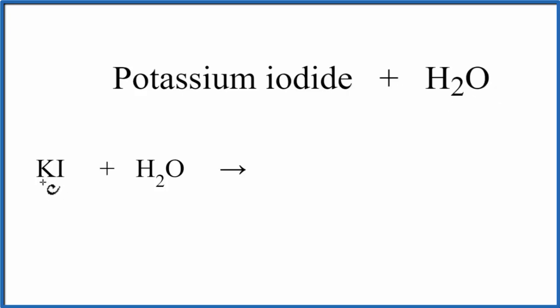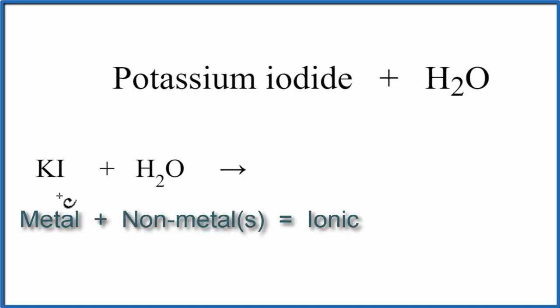Potassium is a metal, and then iodine, that's a non-metal. So when we have a metal and a non-metal, we have an ionic compound, and we need to take into account the ionic charge.